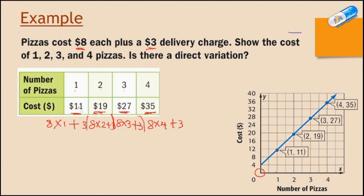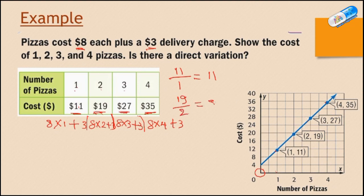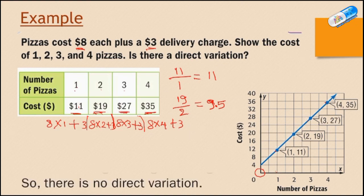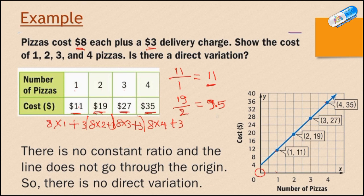But we can prove it also from the table here. We have to look at the relationship between the y and x. Or if we make y over x, 11 over 1, this is for the first point, it's equal to 11. The second point is 19 over 2, and 19 over 2 is 9.5. They are not the same, so we can stop here, we don't proceed more. And we stop here and say that there is no constant ratio. Because the ratio here is 11, the ratio here is 9.5, it's not constant. And the line does not go through the origin also. So all this proves that there is no direct variation between y and x.